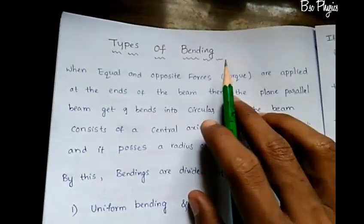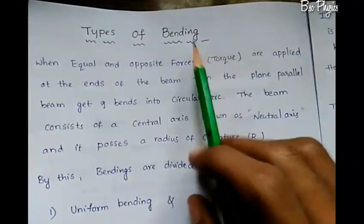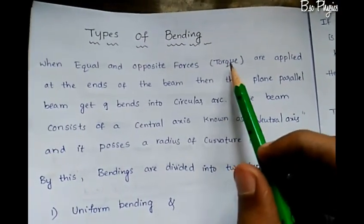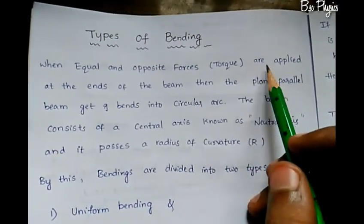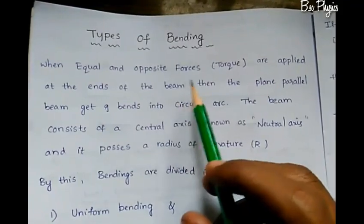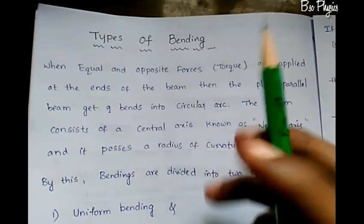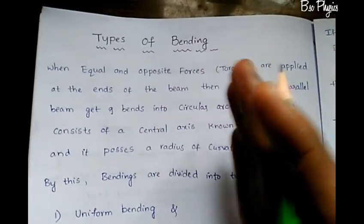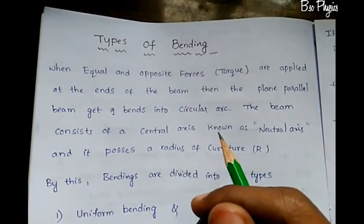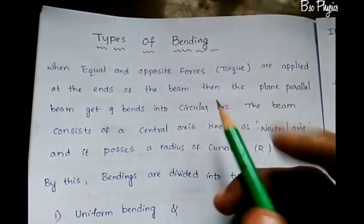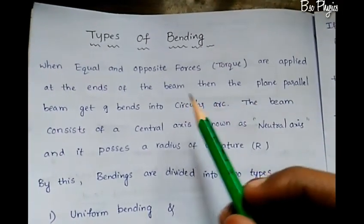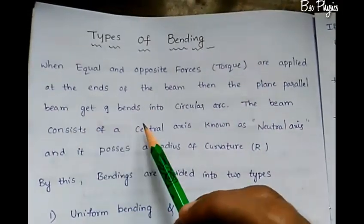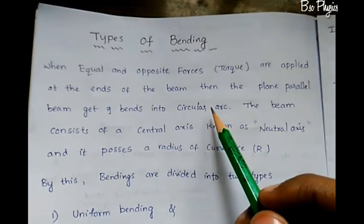This is the torque — applied perpendicular. Torque is applied at both ends of the beam. When torque is applied at the ends, the plain parallel beam bends into a circular arc.